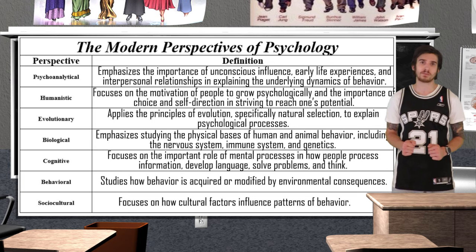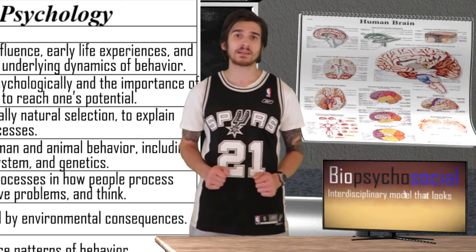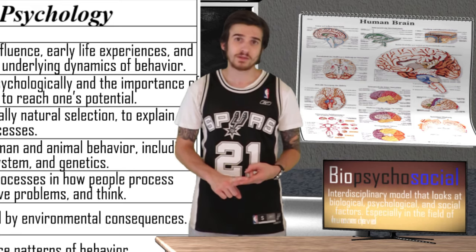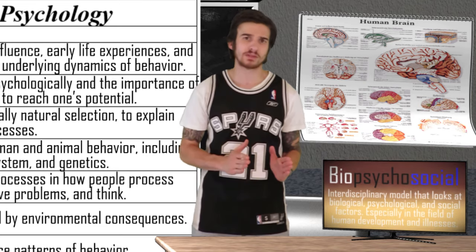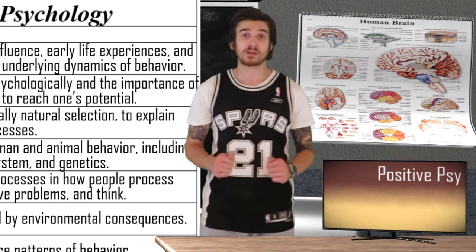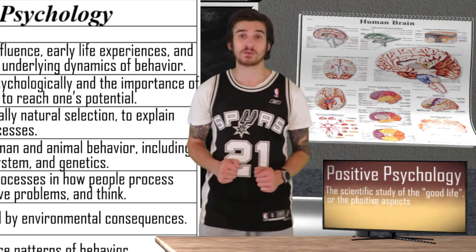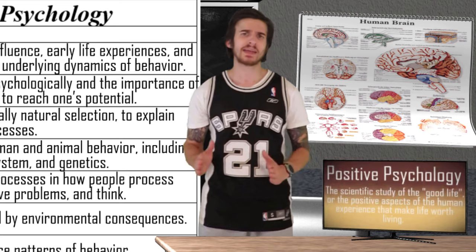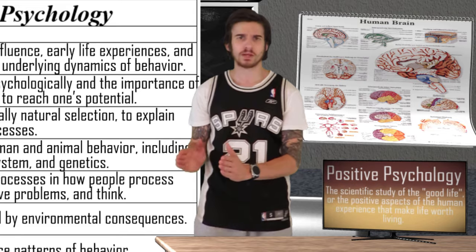Those are our major modern perspectives generally referred to and tested on the AP test, but there are some others that might be fair game. The biopsychosocial model looks at the interconnection between biological, psychological, and environmental factors in determining behavior. This model is very important in explaining things such as stress-related illnesses or human development. Positive psychology, established in 1998 by psychologist Martin Seligman, is a relatively new perspective that emphasizes the good life and the positive aspects of the human experience that make life worth living, focusing both on individual and societal well-being.